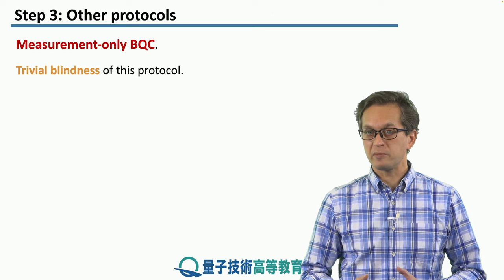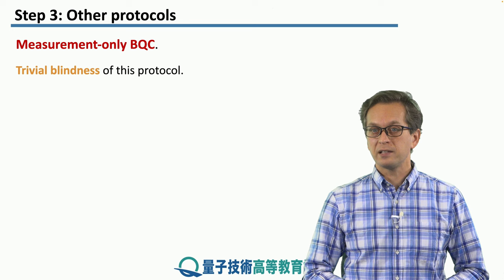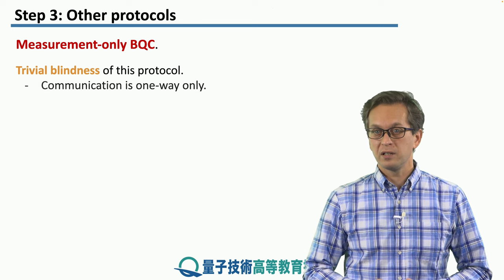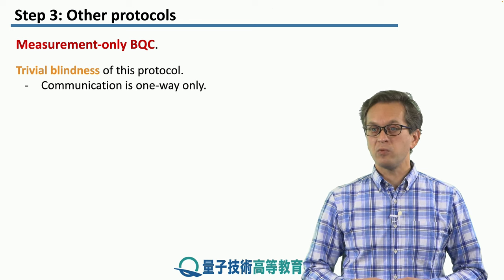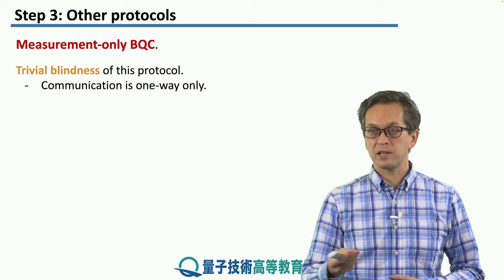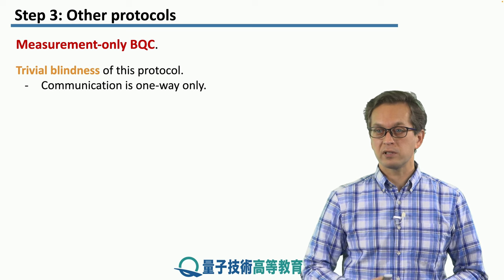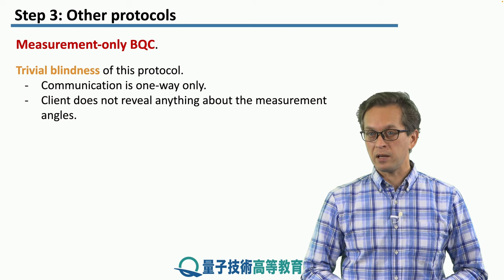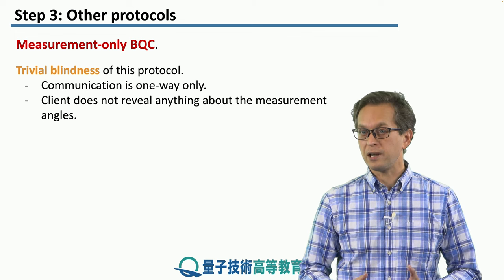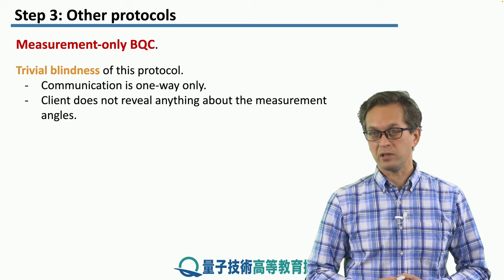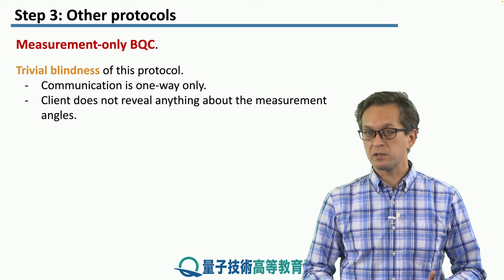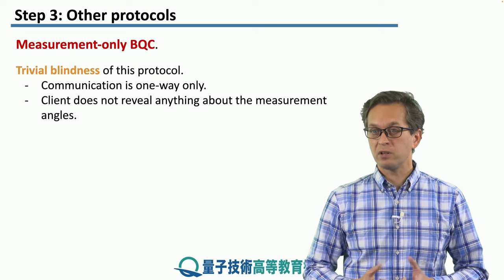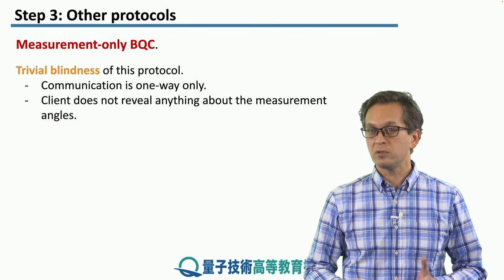There's a very nice property to this protocol: it's trivially blind. The communication is one way only — the server sends the qubits to the client, and the client never reveals the angles at which it is measuring the qubits. Therefore, the server has no way of finding out anything about the computation, or in fact the input or the output.